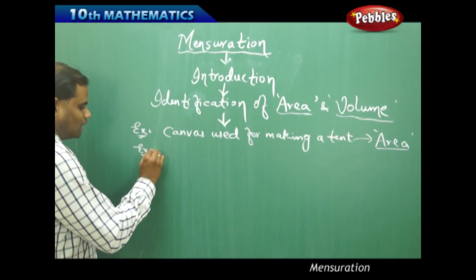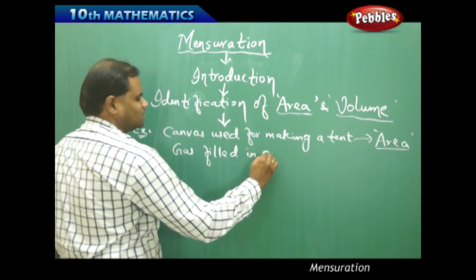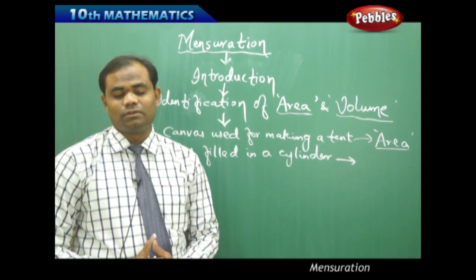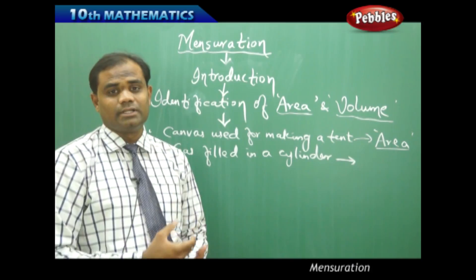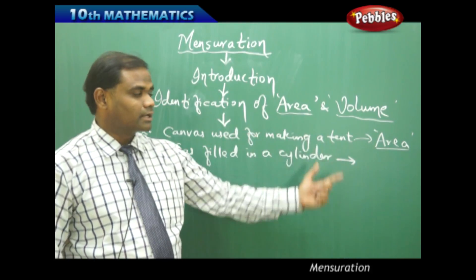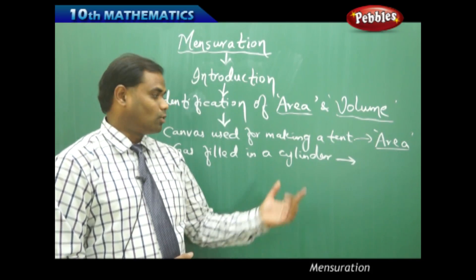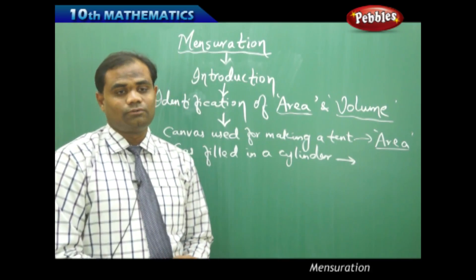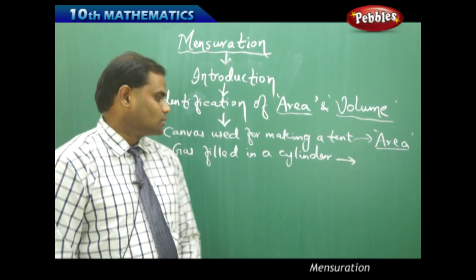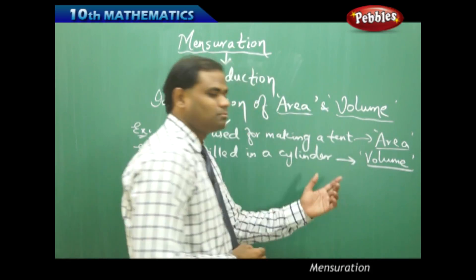Similarly, if I take gas filled in a cylinder, then immediately this situational problem reminds me of volume, not area. Because when gas is filled in the cylinder, we measure it with respect to volume. When we take the amount of canvas for making a tent we measure it through area. Gas filled in a cylinder is identified to be a volume-related problem.